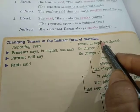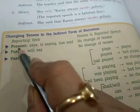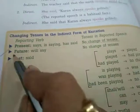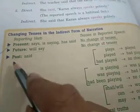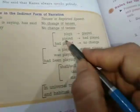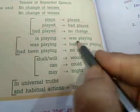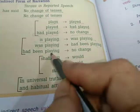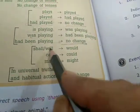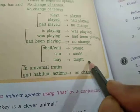Now let us review the overview of tense changes. Reporting verb present — says, is saying, has said — no change of tenses in reported speech. Reporting verb future — will say — no change. Reporting verb past — said: plays becomes played, played becomes had played, had played stays had played; is playing becomes was playing, was playing becomes had been playing; shall/will becomes would, can becomes could, may becomes might. For universal truths and habitual actions, there is no change.